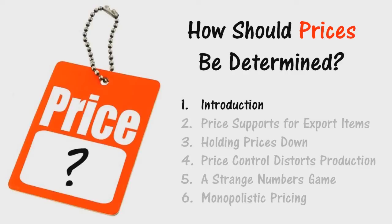In addition to these relatively direct connections among prices, there is an inescapable interconnectivity of all prices. One general factor of production — labor — can be diverted in the short run or in the long run, directly or indirectly, from one line into any other. If one commodity goes up in price and consumers are unwilling or unable to substitute another, they will be forced to consume a little less of something else.